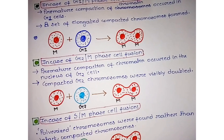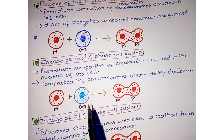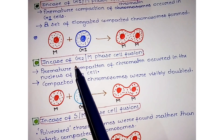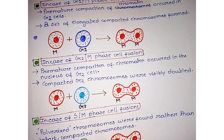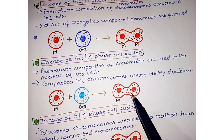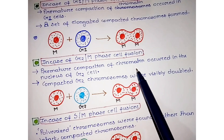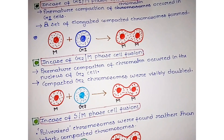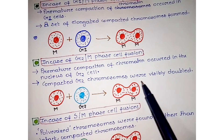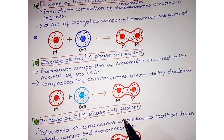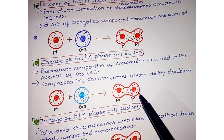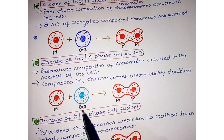In the next fusion experiment, when M phase cells were fused with G2 phase cells, the G2 phase cell was also transformed into M phase. Premature compaction of chromatin occurred in the nucleus of the G2 cell, same as in G1. However, the compacted G2 chromosomes were visibly doubled, because in S phase the number of chromosomes had already been duplicated, giving a double amount of chromosomes when G2 is fused with M phase.